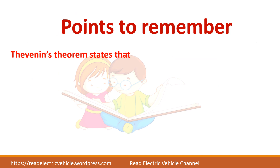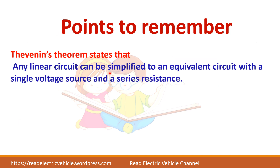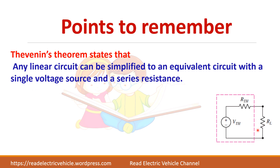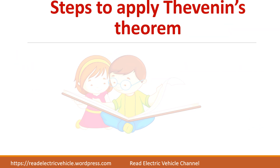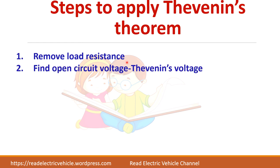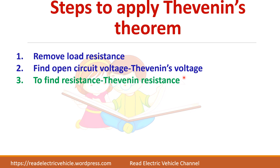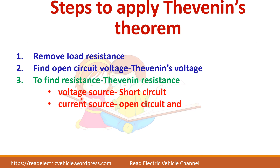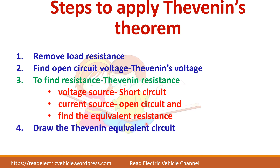The points to remember here are: Thevenin's theorem states that any linear circuit can be simplified to an equivalent circuit with a single voltage source and a series resistance. The steps to apply Thevenin's theorem are: first, remove the load resistance and find the open circuit voltage. Then find the Thevenin resistance by removing the voltage source and current source and finding the equivalent resistance. Then draw the equivalent circuit and find the load current or voltage.